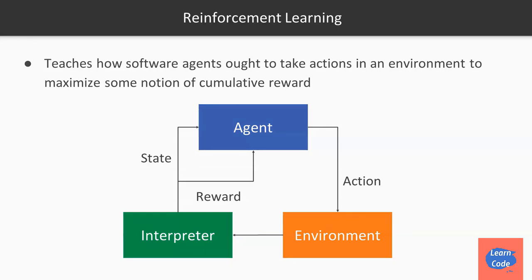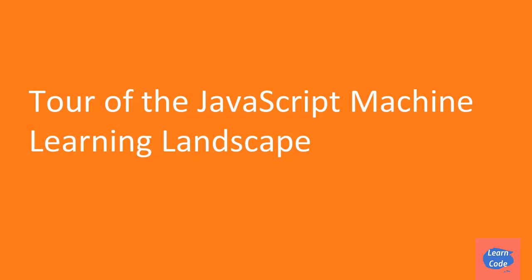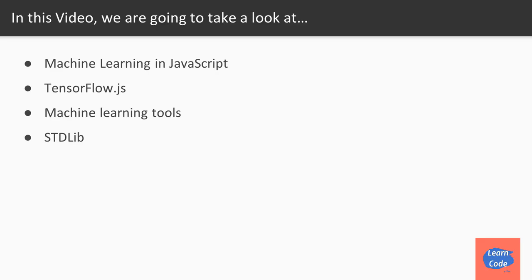In this video, we got an introduction to machine learning and the different types of machine learning. In the next video, we'll go through the JavaScript machine learning landscape. In this video on the tour of the JavaScript machine learning landscape, we are going to look at the advantages of machine learning in JavaScript, TensorFlow.js — an open source JavaScript library which allows us to use neural networks — machine learning tools, a collection of traditional and state-of-the-art ML algorithms, and stdlib for exploratory data analysis and visualization.